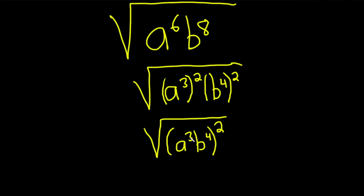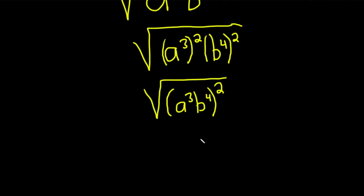So whenever you have the square root of something squared, it just goes away. Again, everything here is positive, so we don't have to worry about absolute values and stuff like that. This is just a cubed b to the fourth.